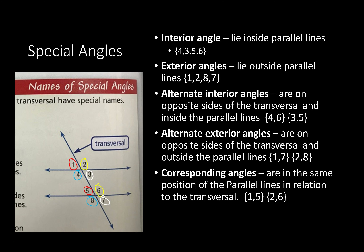I've color-coded this one. Corresponding angles are in the same position on the parallel lines in relation to the transversal. So, one and five are in the same position; two and six, three and seven, four and eight are the other corresponding pairs. We'll talk about those and have some properties about them.